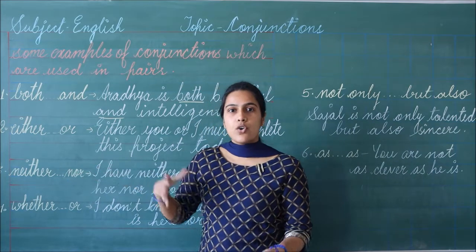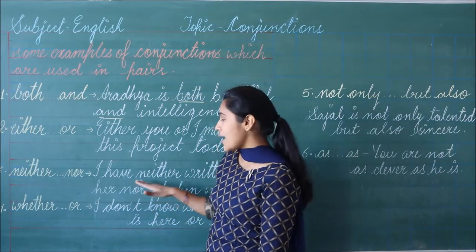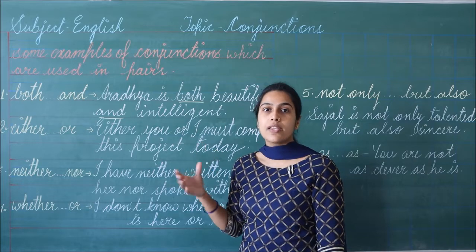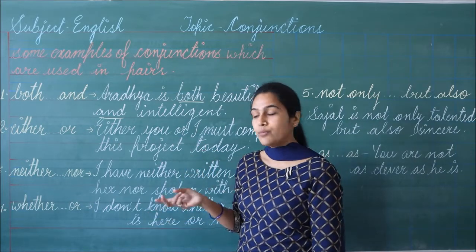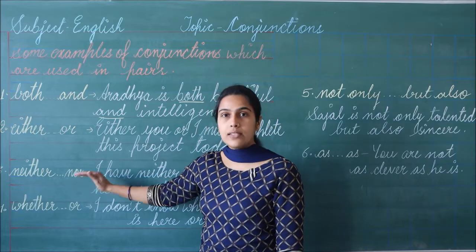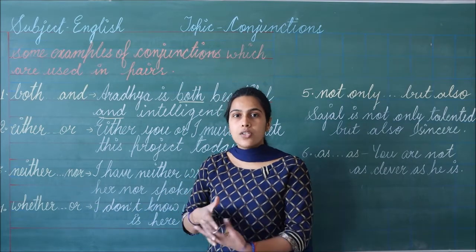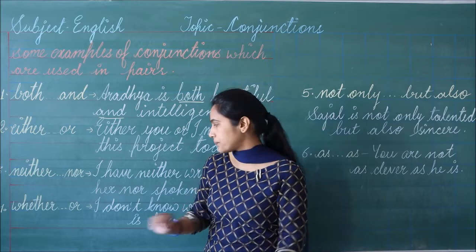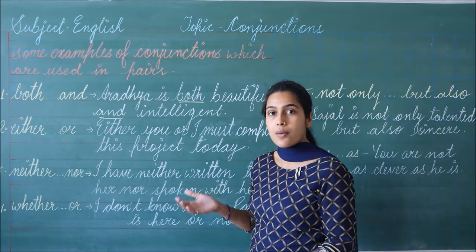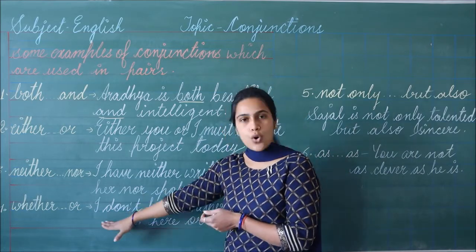Now the third one: 'neither...nor'. Neither nor का use हम negative sense में करते हैं — ना तो ये ना ही ये. Like: I have neither written to her nor spoken with her. Means, ना ही मैंने उसको कुछ लिखा और ना ही मैंने उससे बात की. तो जब हम दोनों ही चीज़ों को deny करना चाहते हैं, तो हम 'neither...nor' का use करते हैं. Neither के साथ in pair हम हमेशा nor का use करते हैं. Now the fourth one: 'whether...or'. Whether or का use हम options देने के लिए करते हैं. Like: I don't know whether Ram is here or not. मुझे नहीं पता Ram यहाँ है या नहीं — तो जब हम दो choices की बात करते हैं, तो हम 'whether...or' का use करते हैं.